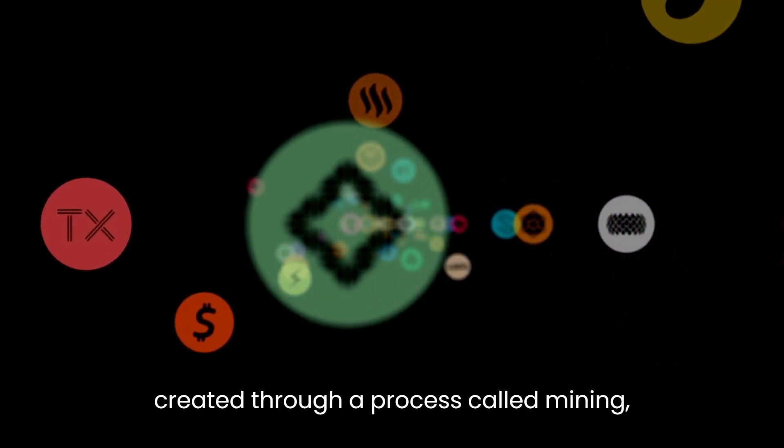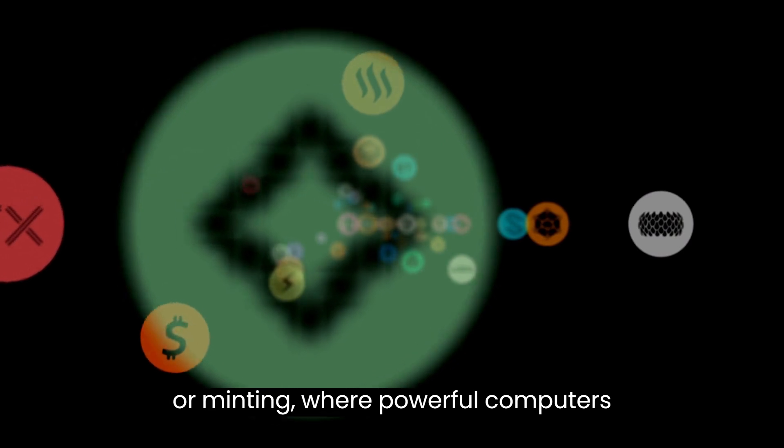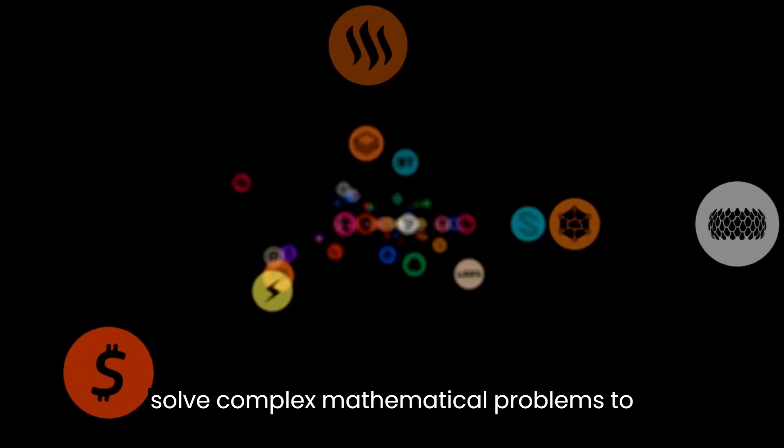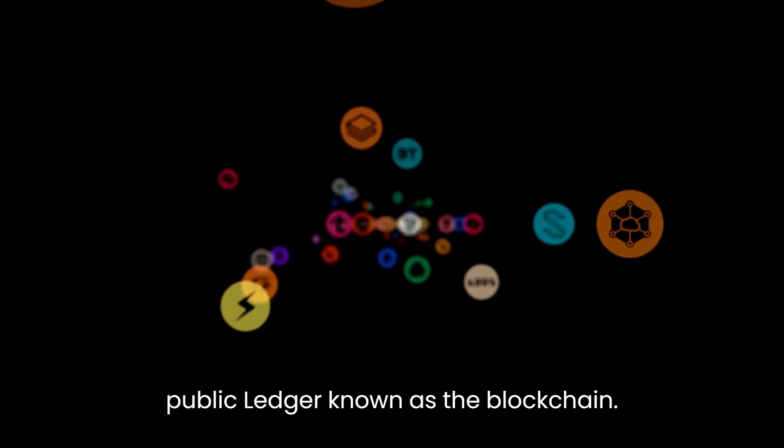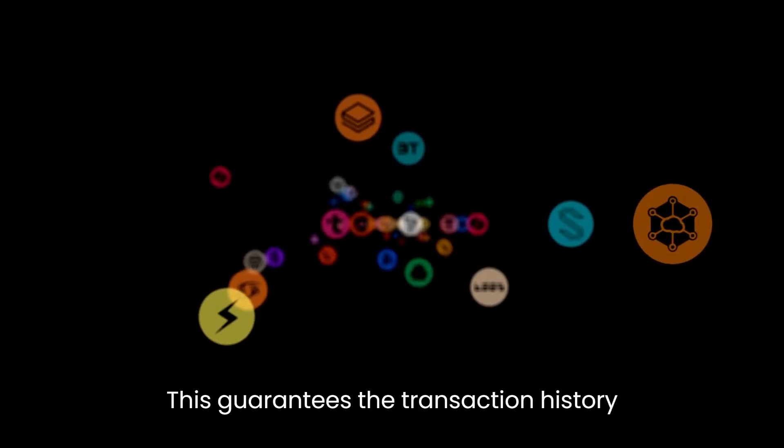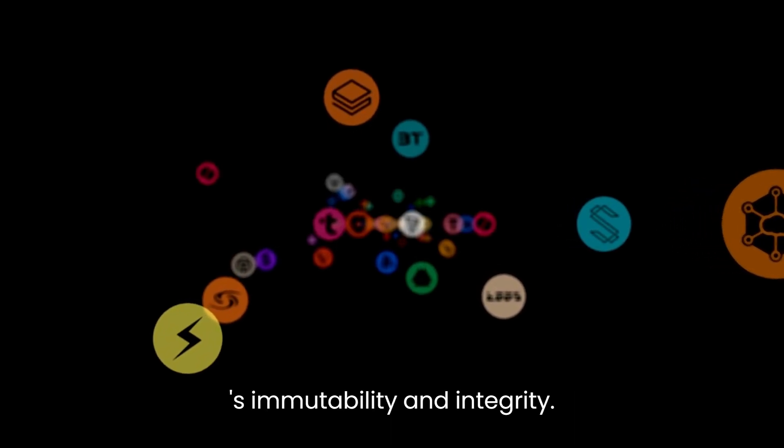Cryptocurrencies are created through a process called mining or minting, where powerful computers solve complex mathematical problems to validate transactions and add them to a public ledger known as the blockchain. This guarantees the transaction history's immutability and integrity.